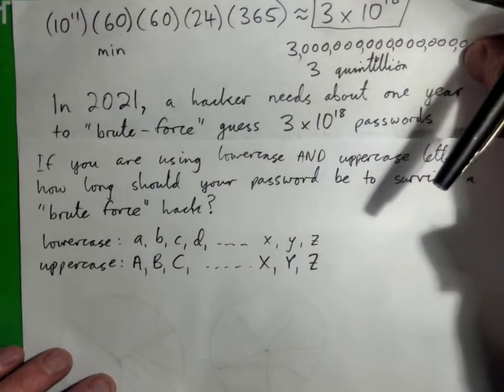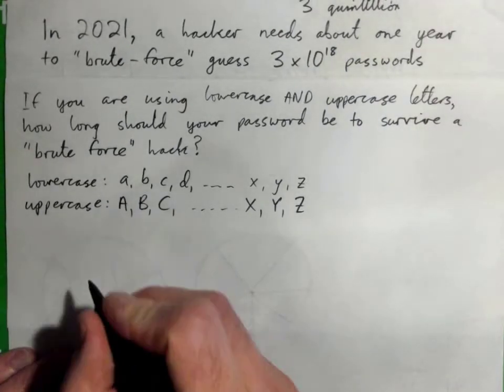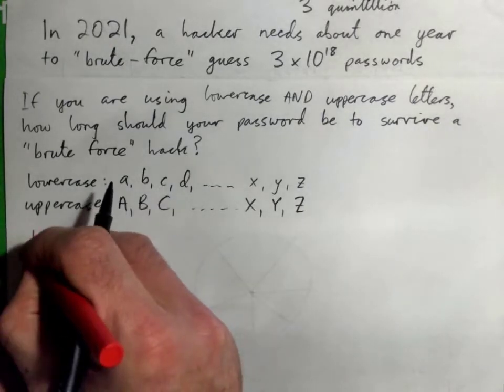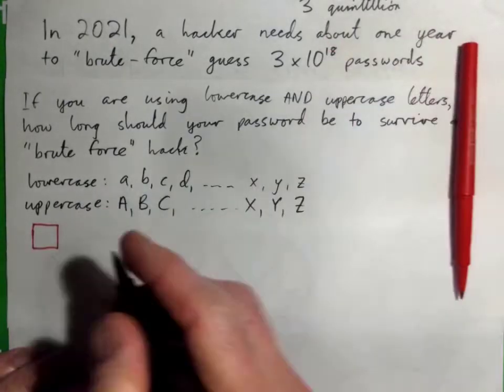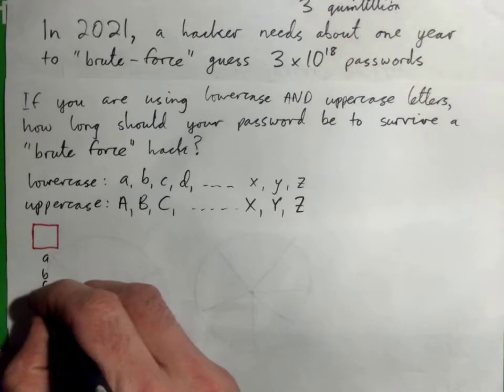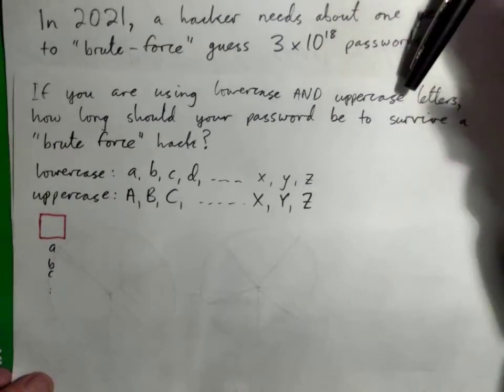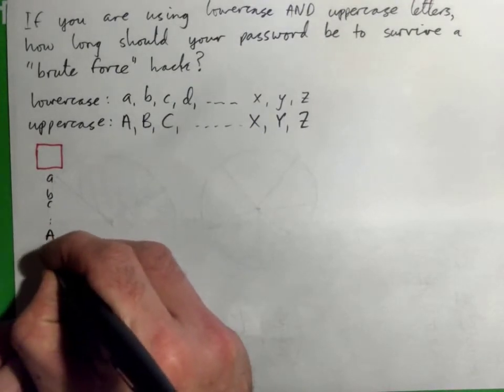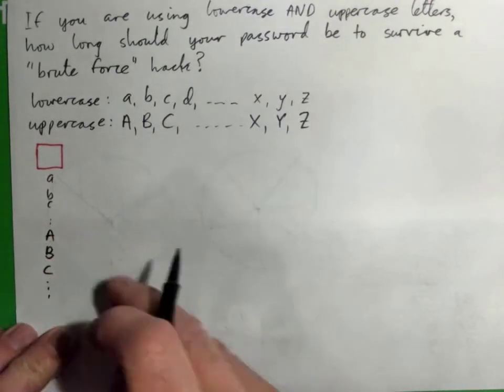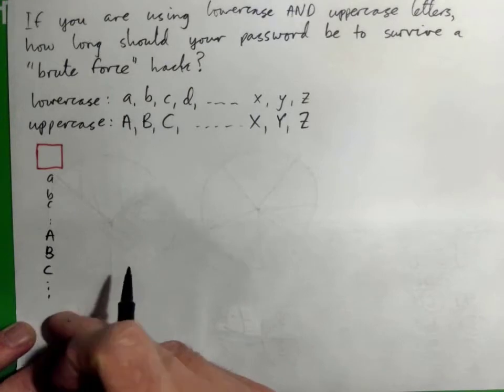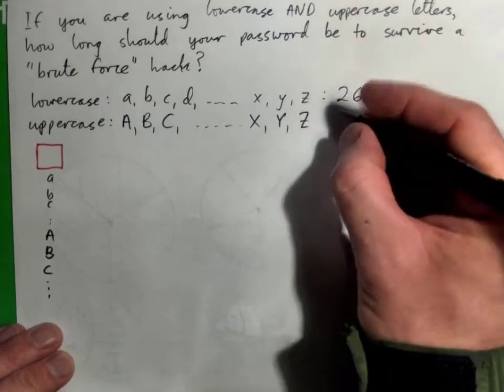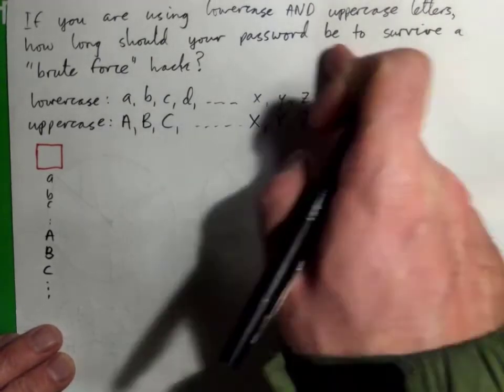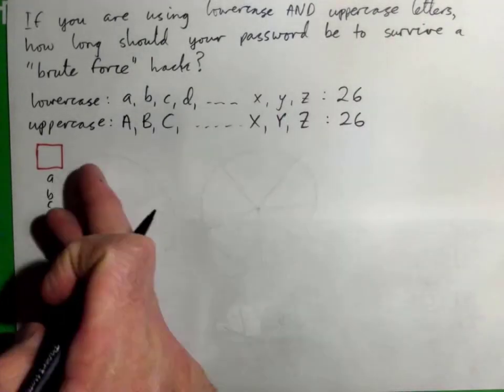Just to get you started if you're stuck on this, what I want you to think of is I've got a password. The first digit can be ABC, all the lowercase letters, but it could also be ABC, all the uppercase letters as well. Now there's 26 lowercase letters in the alphabet and there's 26 uppercase letters in the alphabet, so how many possible